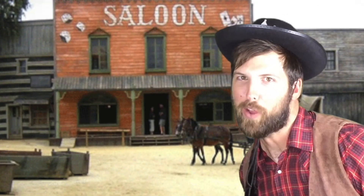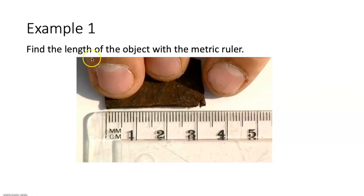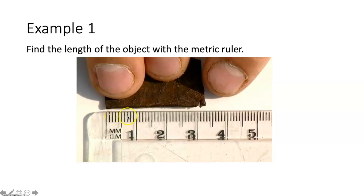Now you've got the vocab — it's example time! Example one says find the length of the object with the metric ruler. A metric ruler is in centimeters and millimeters. In a metric ruler, there are 10 millimeters in every centimeter.